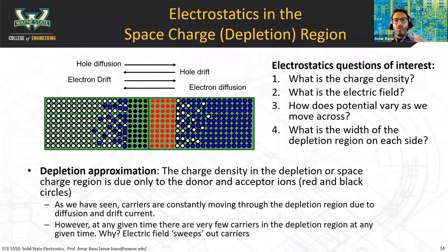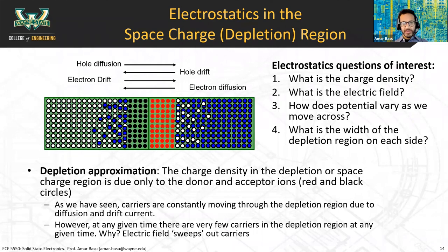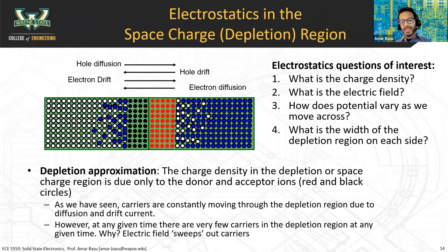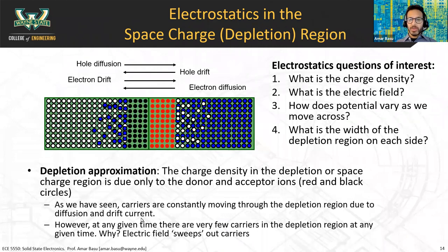Now we're going to talk about more of the specifics — the electrostatics in the depletion region. We're peeling back the layers of the onion here, going into a little bit more detail and becoming more quantitative. Thus far we just had a very qualitative description of what's happening. Now we're going to derive some relationships.